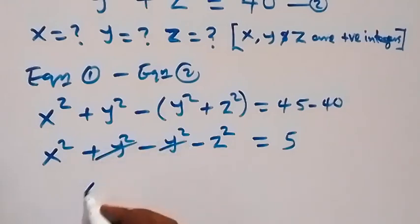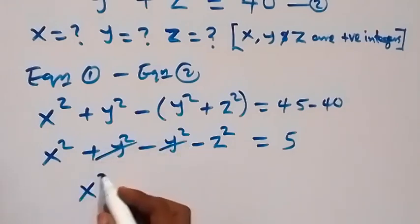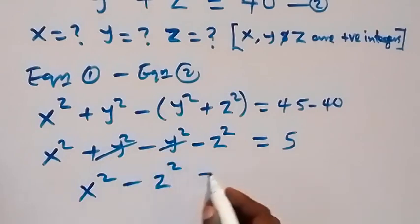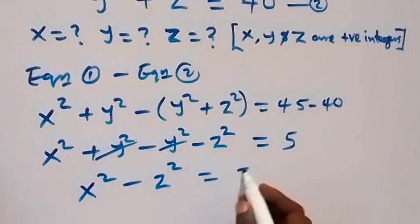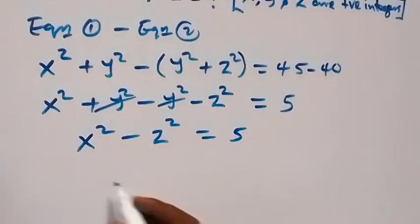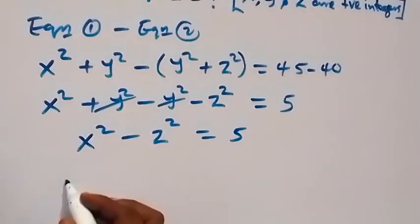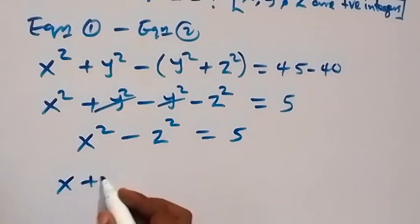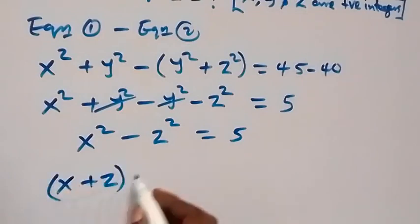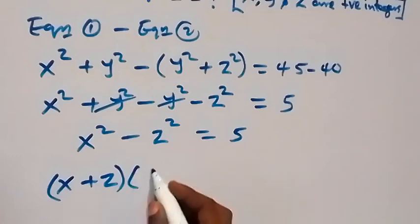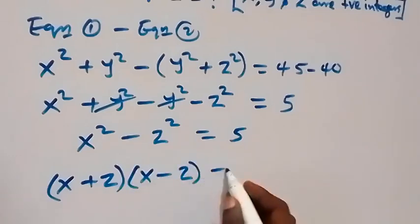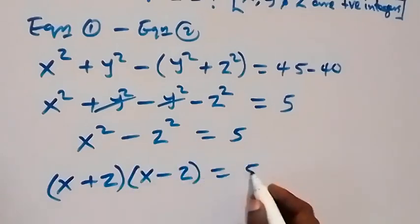The plus y squared and minus y squared cancel out, and we have x squared minus z squared equals 5. This follows from the difference of two squares, and can be written as (x plus z) multiplied by (x minus z), which equals 5.